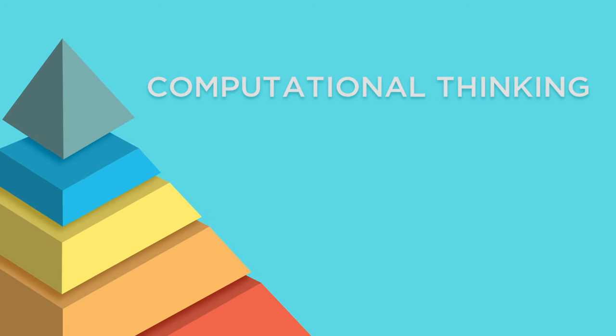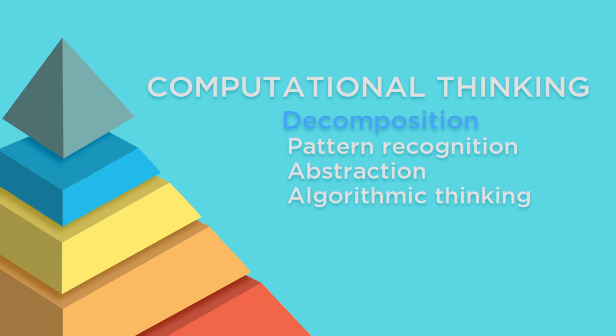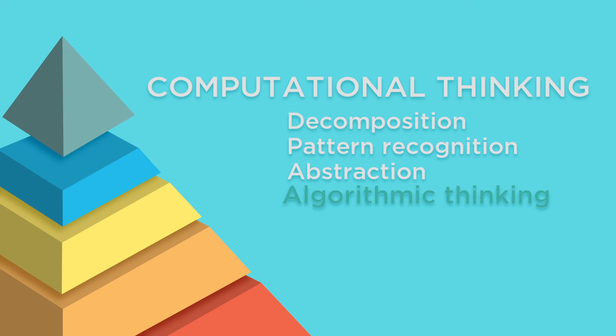Computational thinking is made up of four elements: Decomposition, pattern recognition, abstraction, and algorithmic thinking.